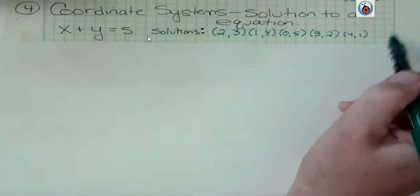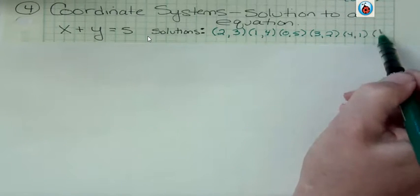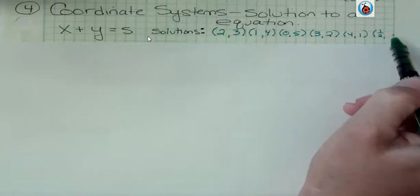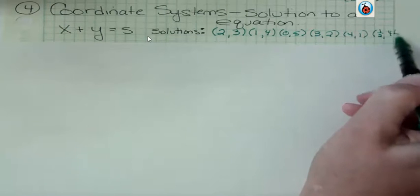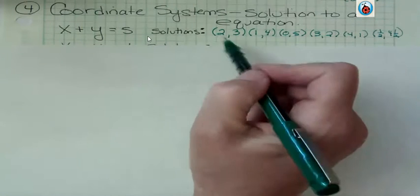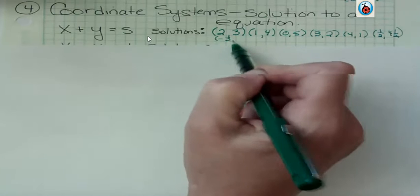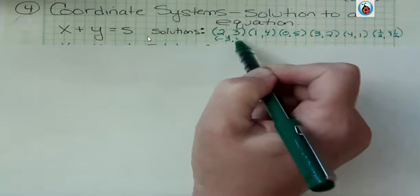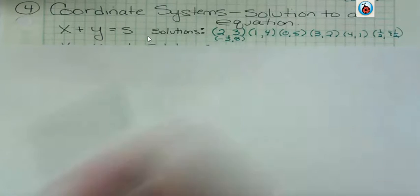But wait a minute, couldn't I say, what if x is 1 half? If x is 1 half, y could be 4 and a half. I don't have to just stick with whole numbers. In fact, I could use negatives. I could say, what if x was negative 3? Well, if x was negative 3, y could be 8. And what we start to see is, whoa, we could sit here for the rest of our lives and give solutions to that equation.